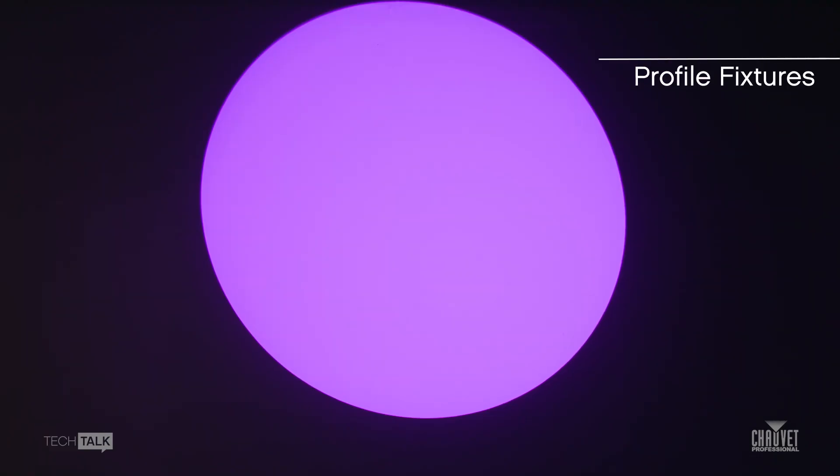Another type of spot fixture is the profile. In Chauvet speak, a profile is a fixture that has framing shutters in it. For us, those framing shutters always rotate, so you have the ability to move them as you need. This gives you the ability to better cut off objects — no matter how the fixture is oriented, you'll be able to find an angle to cut off from a door frame or scenic elements you don't want light on. It also gives you the ability to make some pretty cool layered effects. This effect right here was done with just a gobo wheel, animation wheel, a little bit of color, and framing, so if I wanted to cut this off of the door frame, I could do that very easily.